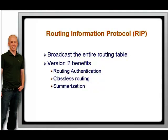RIP routers exchange information by broadcasting the entire routing table every 30 seconds out all interfaces with RIP enabled. RIP version 2 also sends out updates every 30 seconds, but sends out updates using the multicast address of 224.0.0.9.